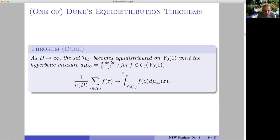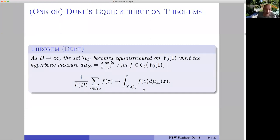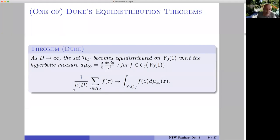Duke's first theorem tells you that when the discriminant grows among imaginary quadratic discriminants, the set of CM points — called Heegner points of discriminant D — is equidistributed on the modular curve with respect to the hyperbolic measure. That is, for any compactly supported continuous function on the modular curve, the average of the values over the CM points of discriminant D converges to the hyperbolic measure of the function.